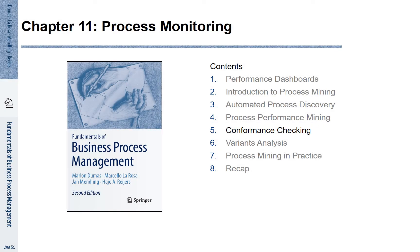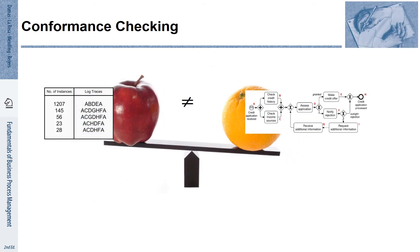Chapter 11, Section 5: Conformance Checking. In this section we give a very brief overview of conformance checking. Conformance checking is concerned with comparing a process model and an event log. The ambition is to identify parts of sequences that are not in line with the process model, and to give an indication of how often and to what extent such deviations are observed. This means we need as a starting point both a process model and an event log.